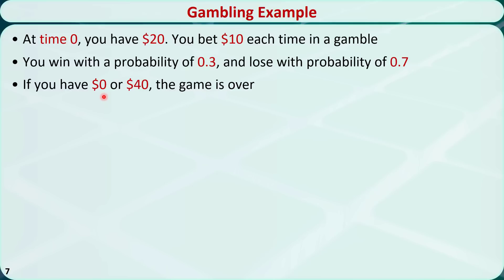Suppose that you start with $20 at time 0 and bet $10 each time in a gamble. You win with probability 0.3 and lose with probability 0.7 in each gamble. You will continue to gamble until you have $0 or $40. $0 means you don't have any money left; $40 means you win $20 from your opponent and the opponent doesn't have any money left. Now let's model this problem as a Markov chain.